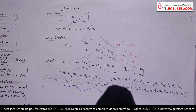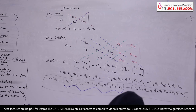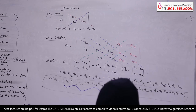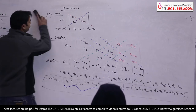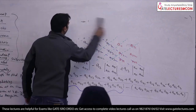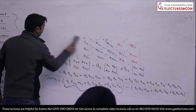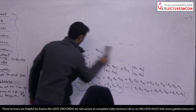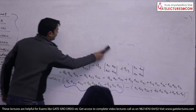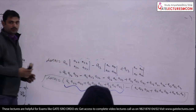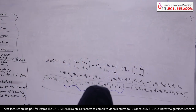Now, some properties — if you know the types of matrices, then you can easily find the determinant.